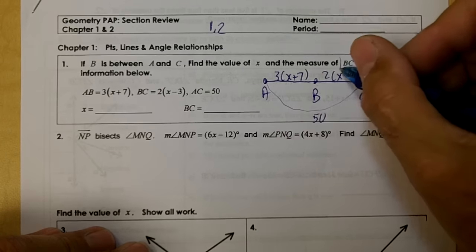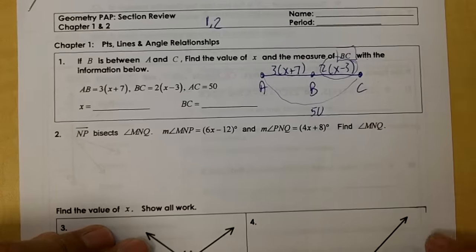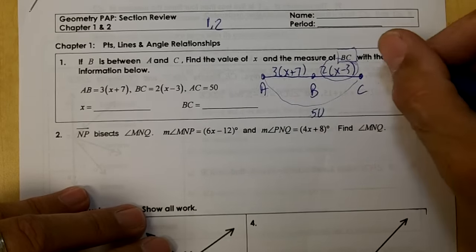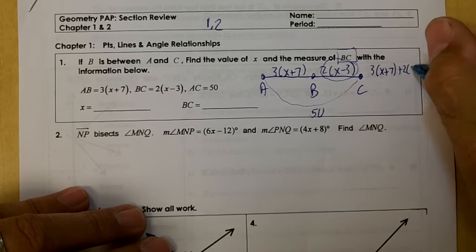And we want to find the measure of BC. So we want the answer to this. We know that this plus this is going to equal 50. So 3(X+7) plus 2(X-3) equals 50.